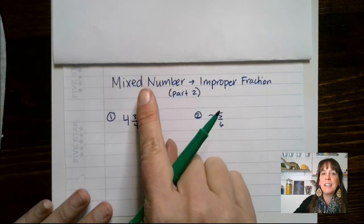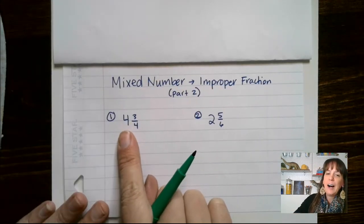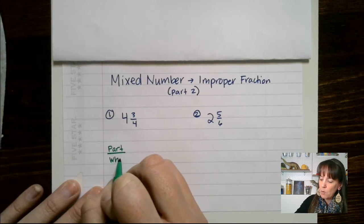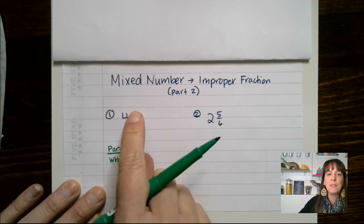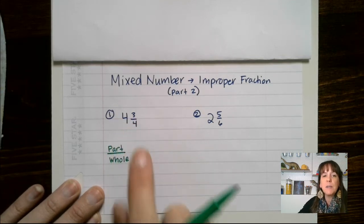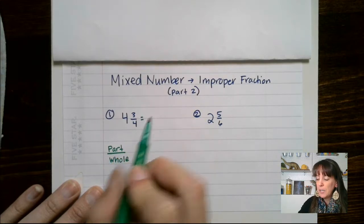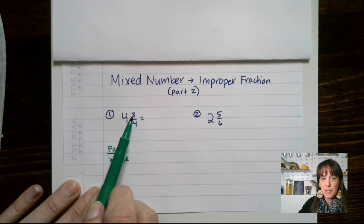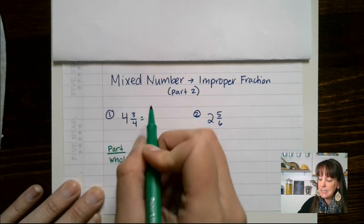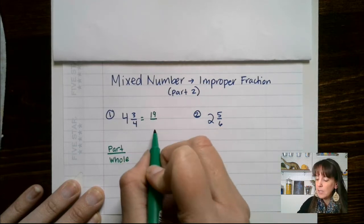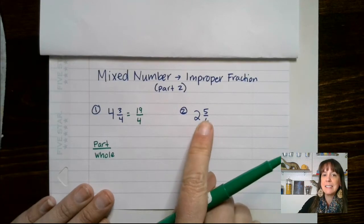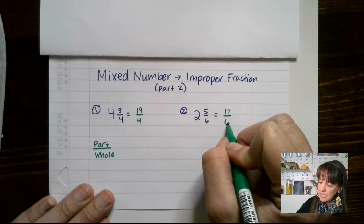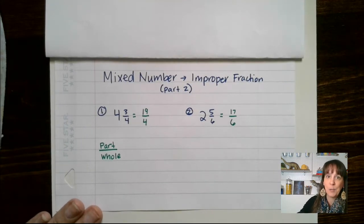Our next refresh is mixed numbers to improper fractions. A fraction is generally our part over our whole. Here we have 4 and 3 fourths — four wholes and three fourths. To turn this mixed number into an improper fraction, you take 4 times 4, which gives us 16, then add 3 to get 19. The denominator always stays the same. Let's try another: 6 times 2 is 12, plus 5 gives me 17. So I get 17 over 6. That is how you turn mixed numbers into improper fractions.